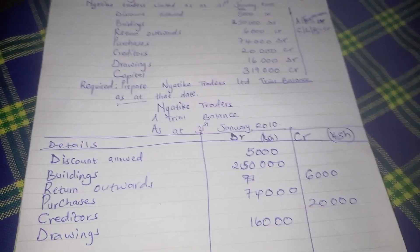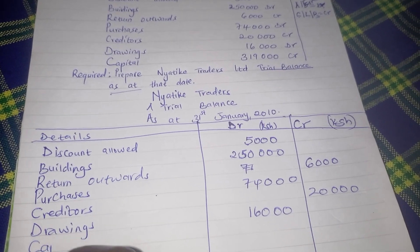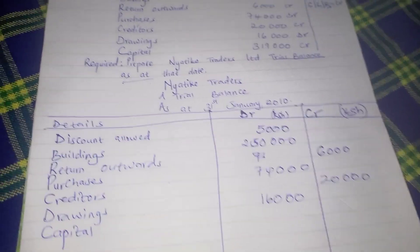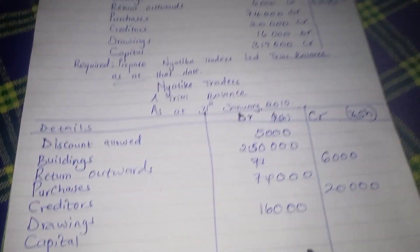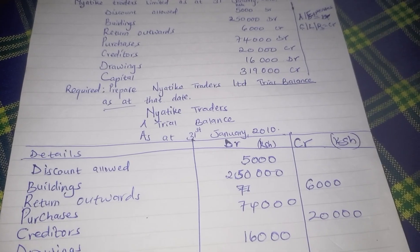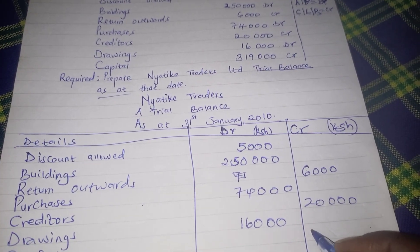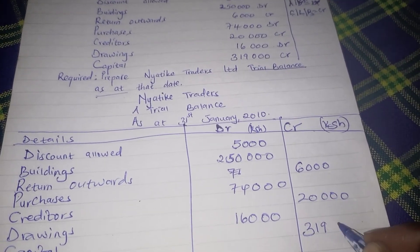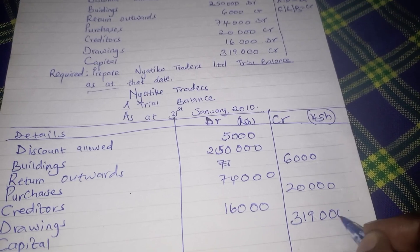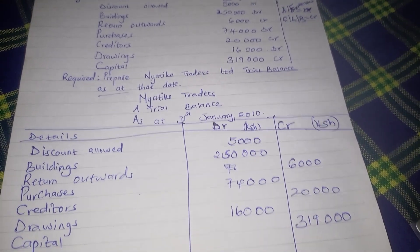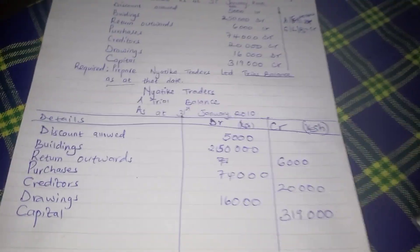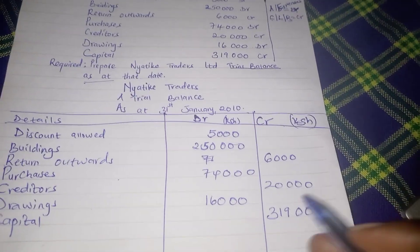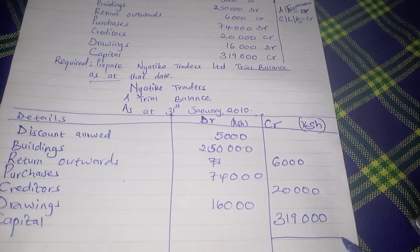And then finally we have capital, which is $319,000. Capital has a credit balance, so we record $319,000 on the credit side. The next thing is to get the totals on both sides.